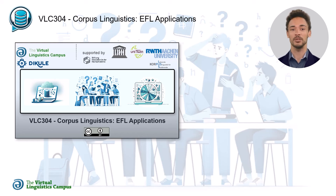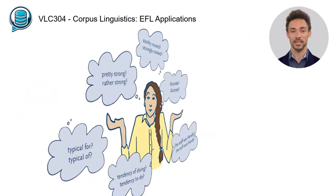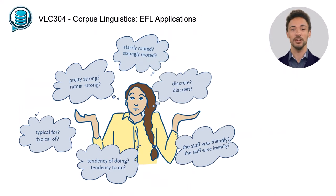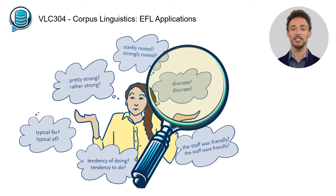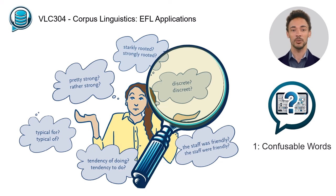Such language problems come up in a variety of situations, contexts, and linguistic areas. Learners might wonder what the difference is between homonyms such as discreet and discrete, or other easily confusable words. Unit 1 will show you how to answer such questions with the help of a corpus.